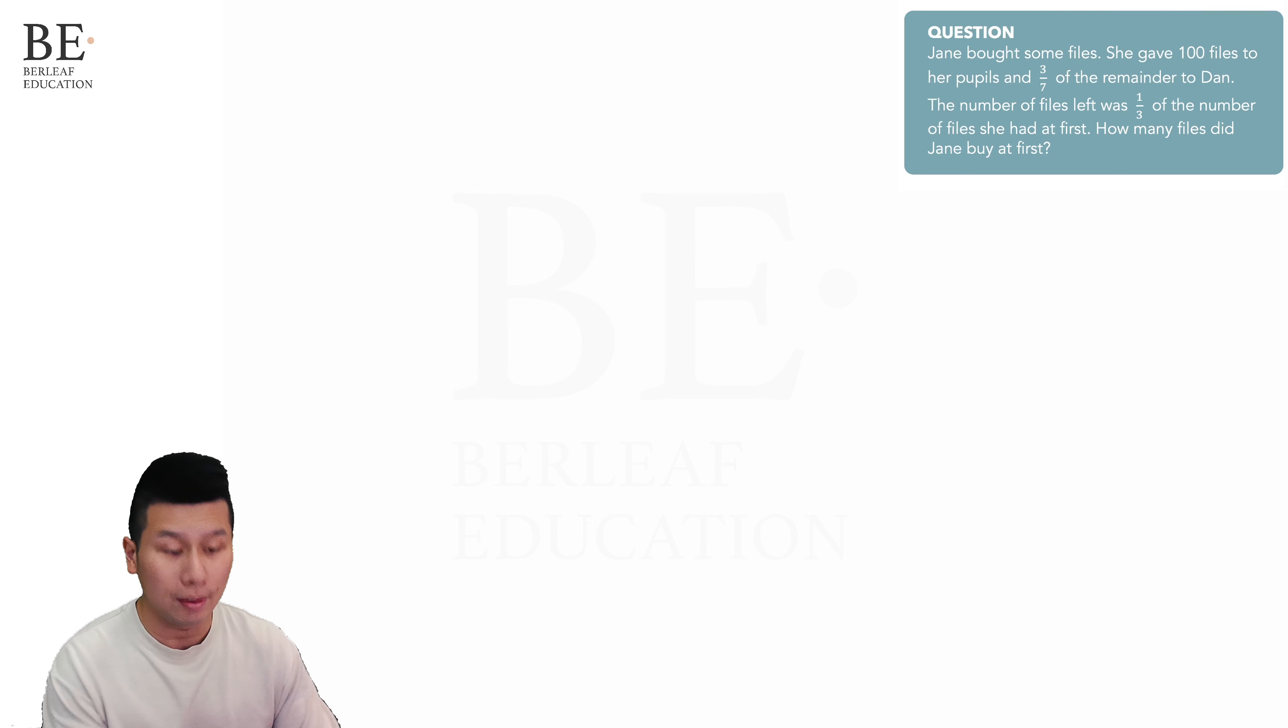How many files did Jane buy at first? So let's highlight some of this important information. From what we can see here, there is 3 over 7 of the remainder. Now this means that we are stretching beyond just looking at the reference point of the total number of files.